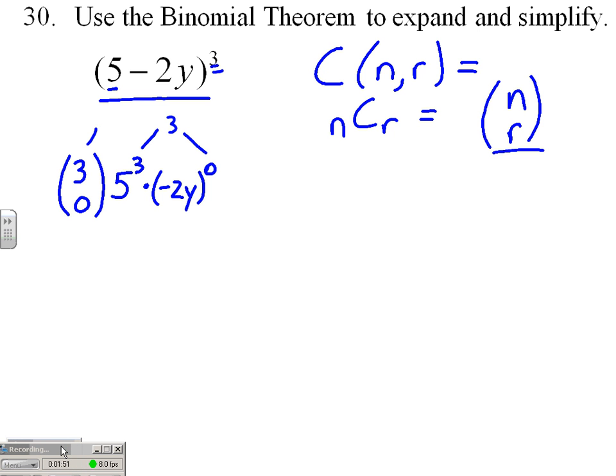Second term becomes C(3,1), and then we reduce our fives, 5², as we increase our negative 2y's, (-2y)¹.